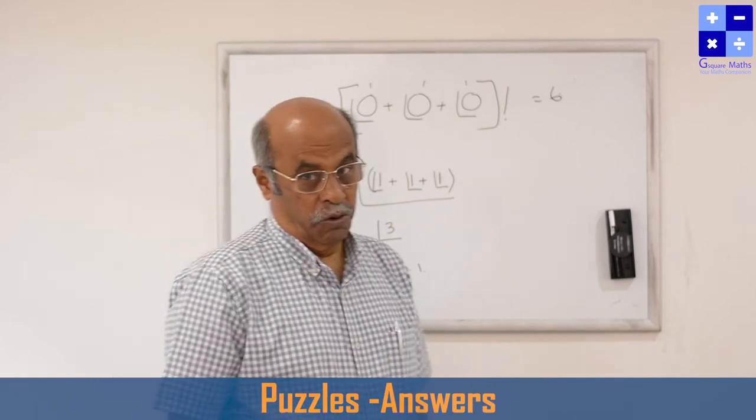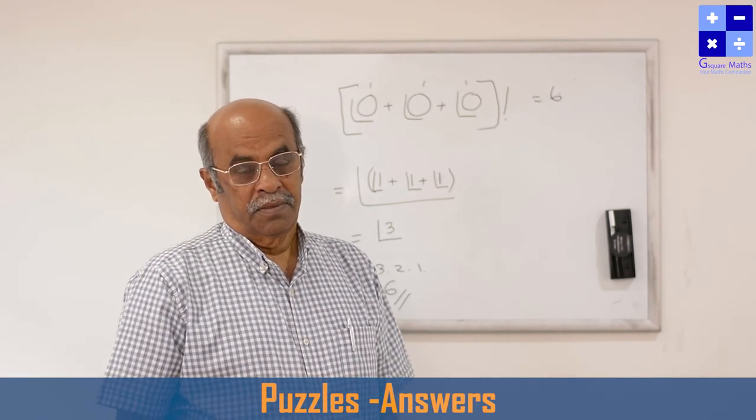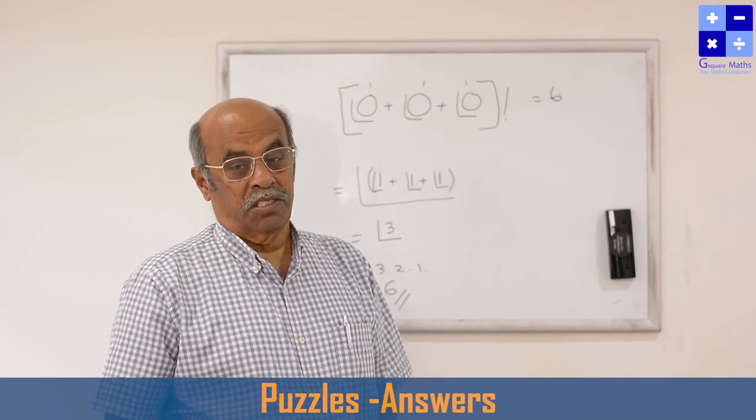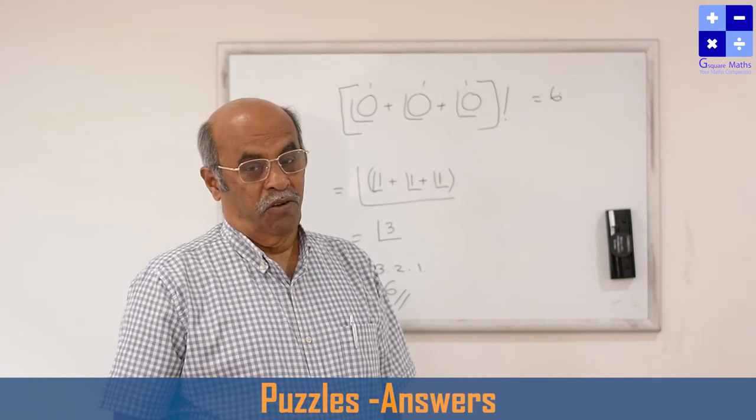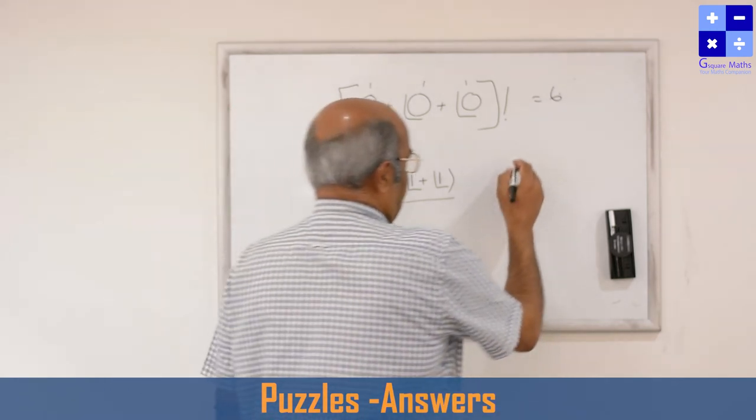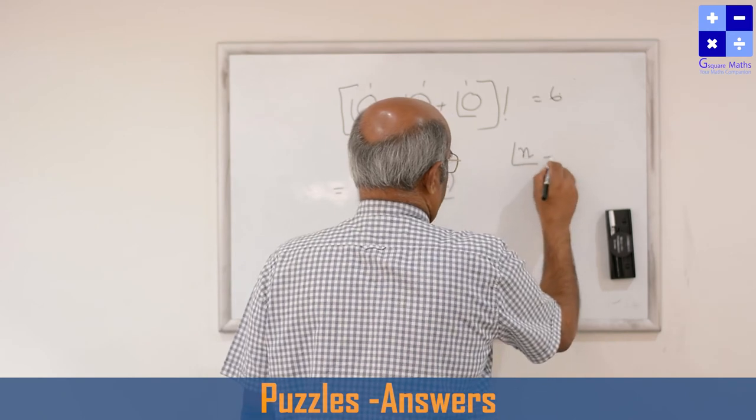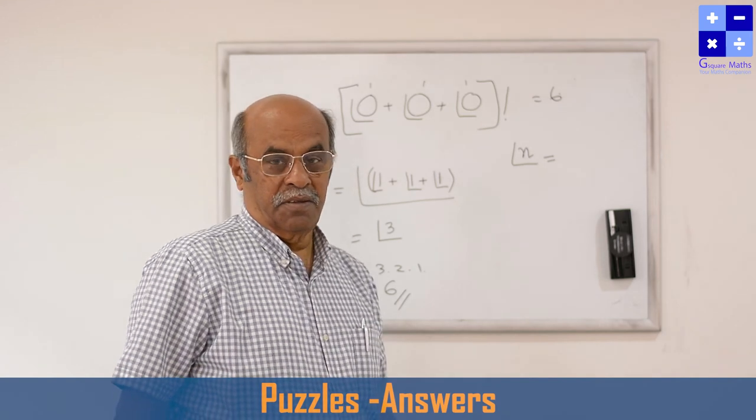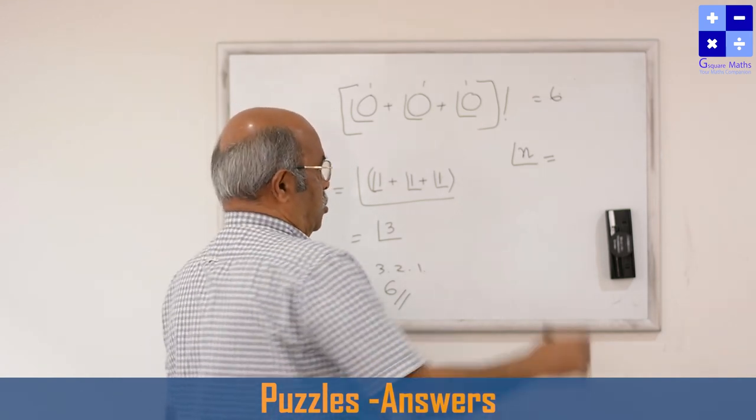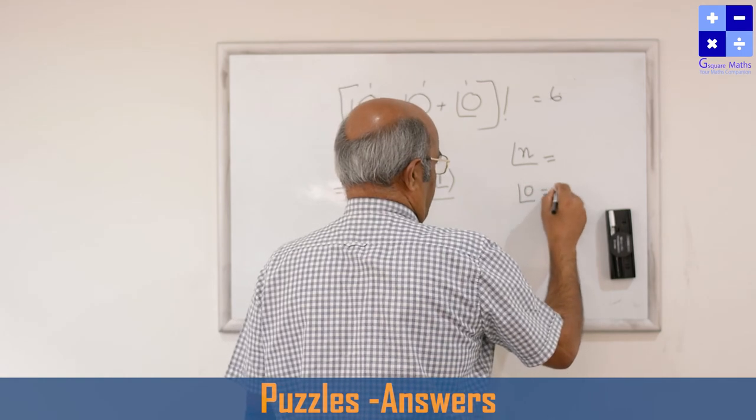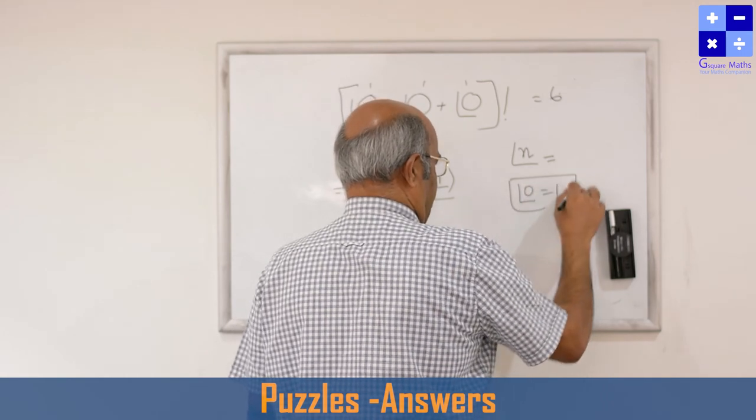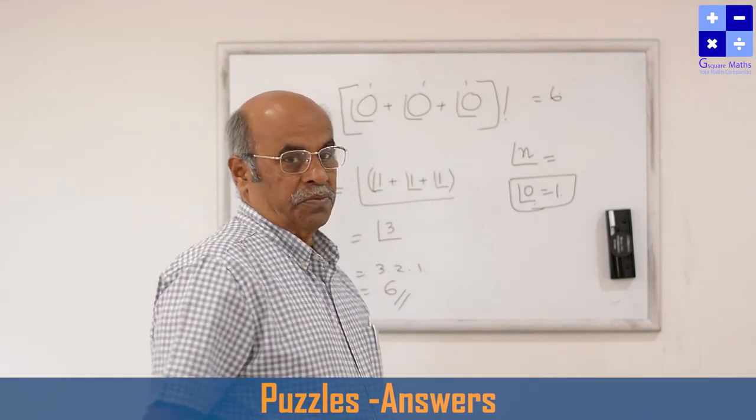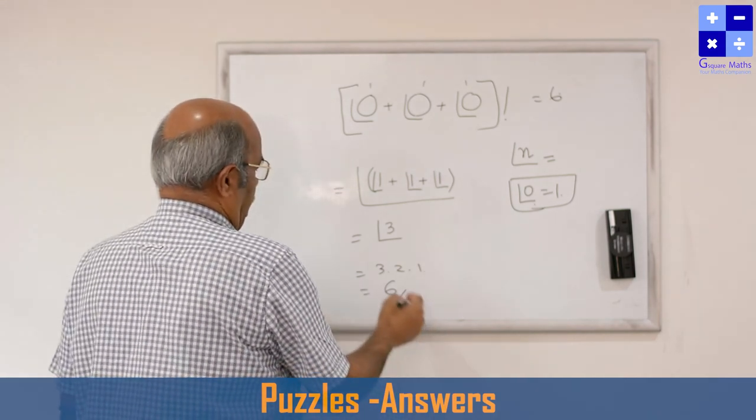So where we have to be careful—factorial 0 is 1. This notation we have to be very careful. It is defined for the first n natural numbers only, so the 0 question doesn't arise. Factorial 0 is 1, we defined that also, but when we are substituting, n should not be 0 at all. And that is equal to 6.